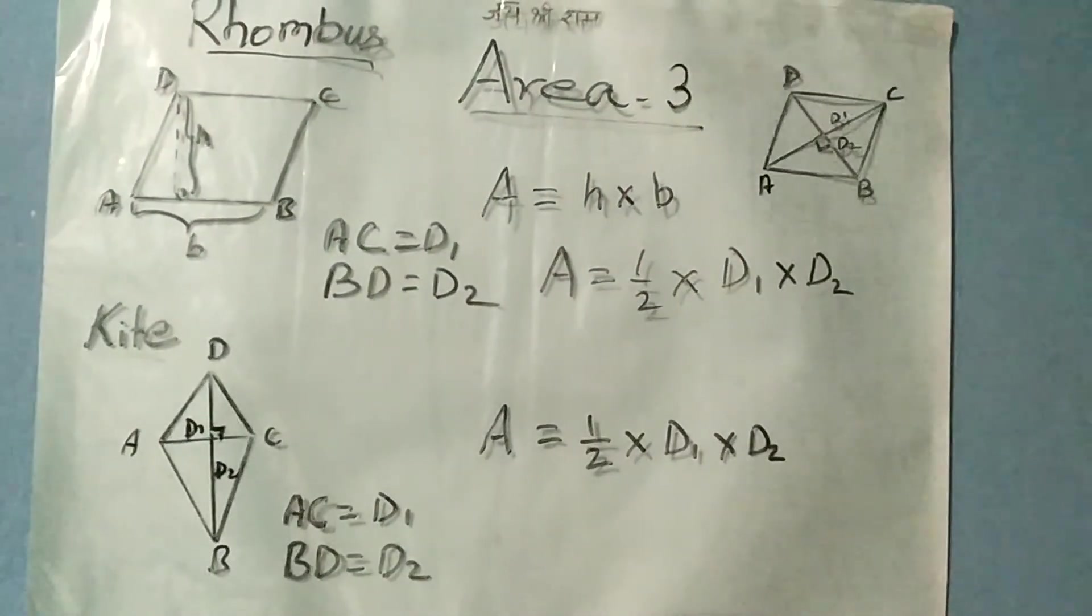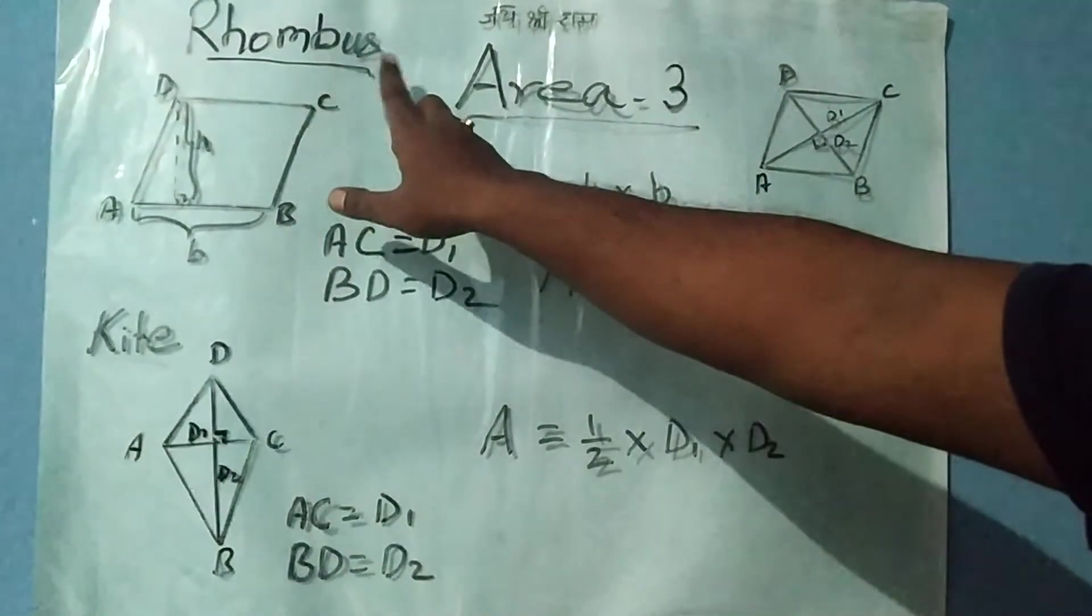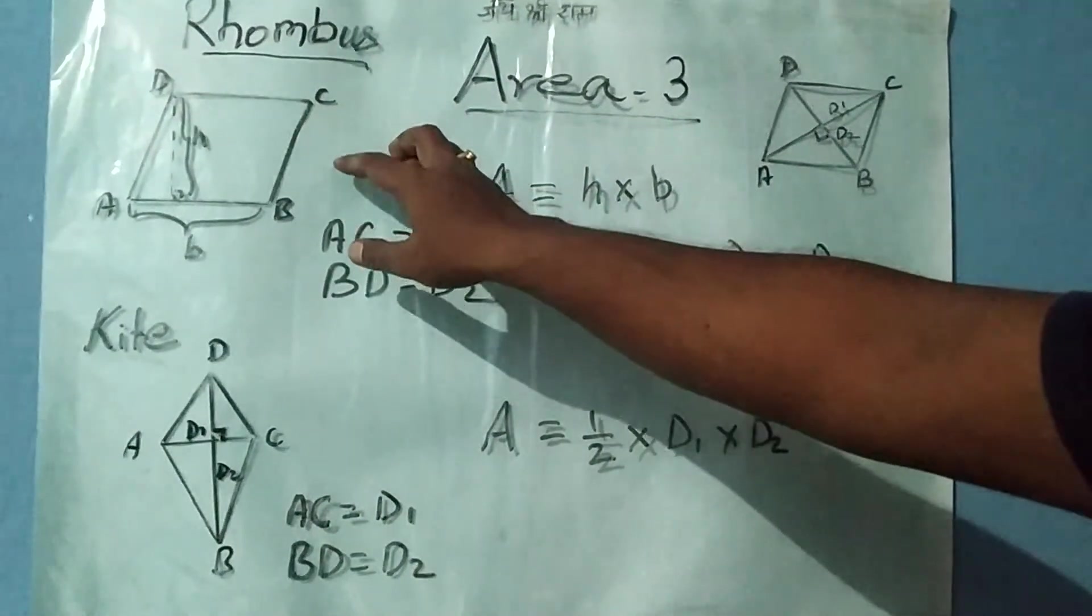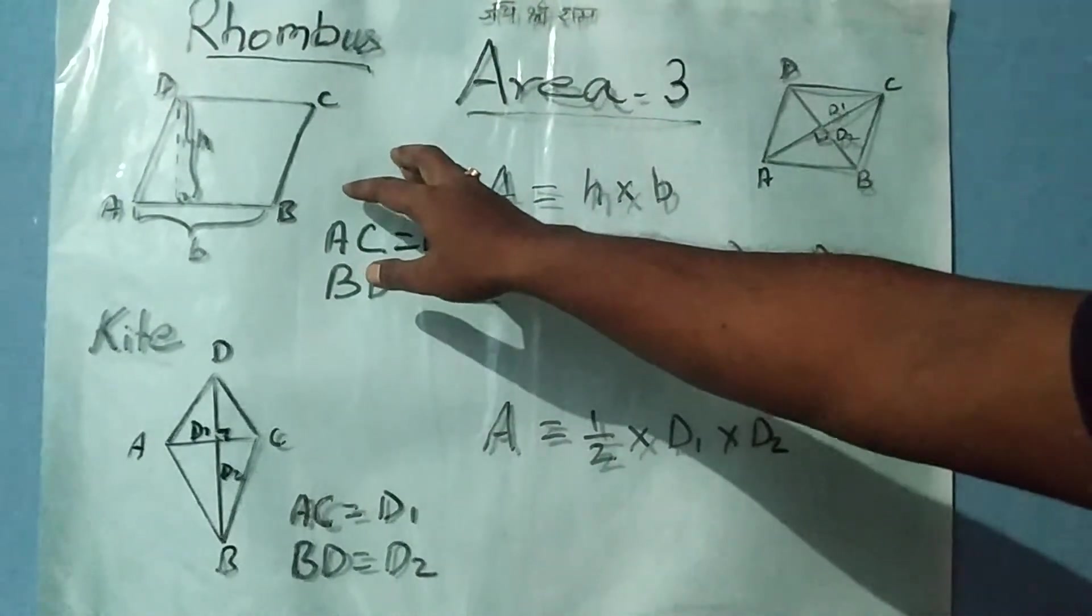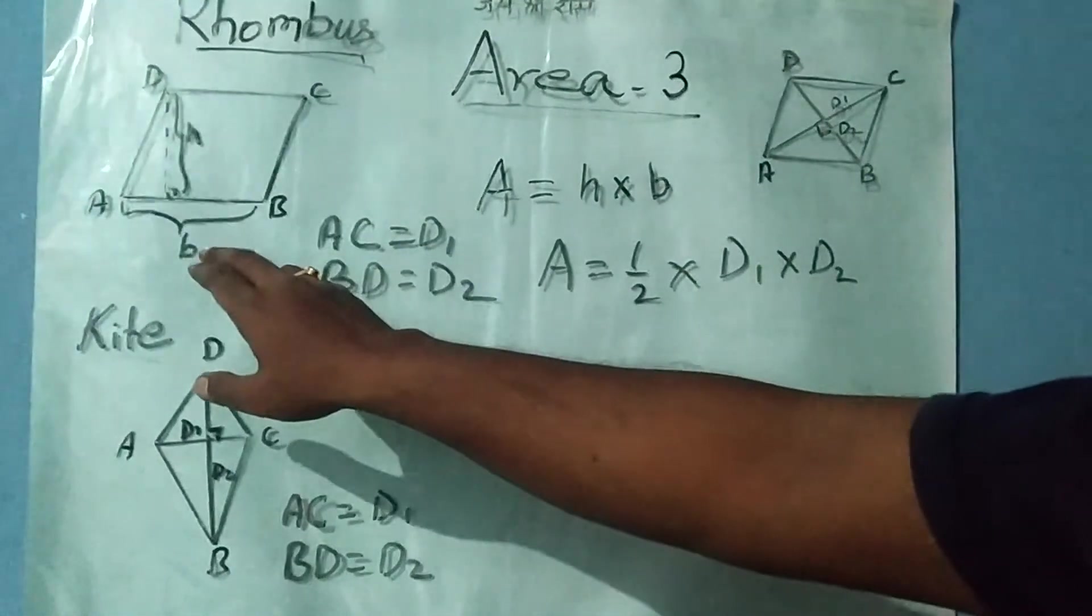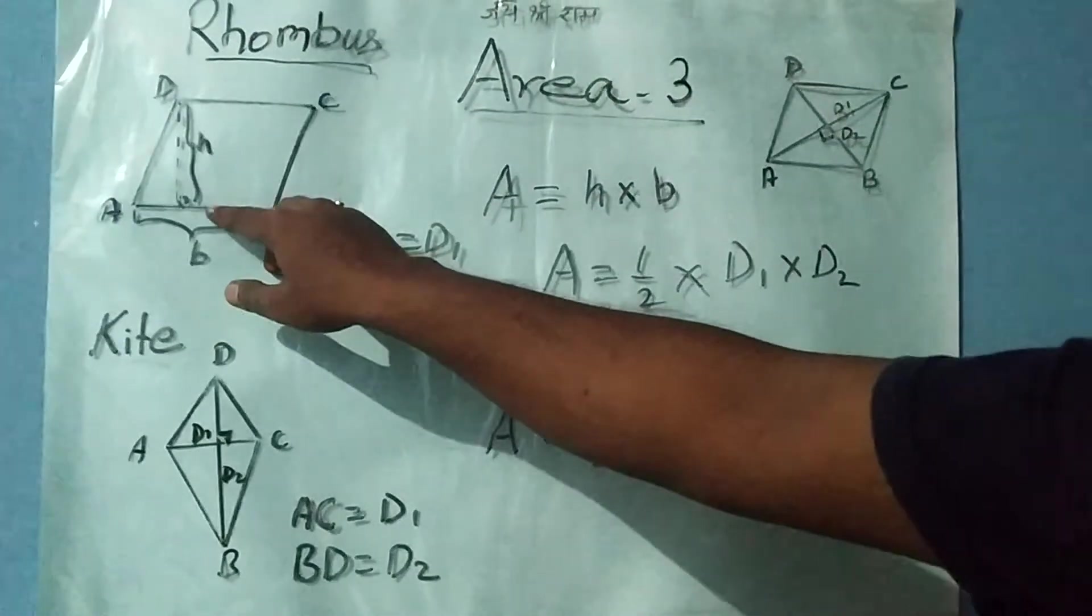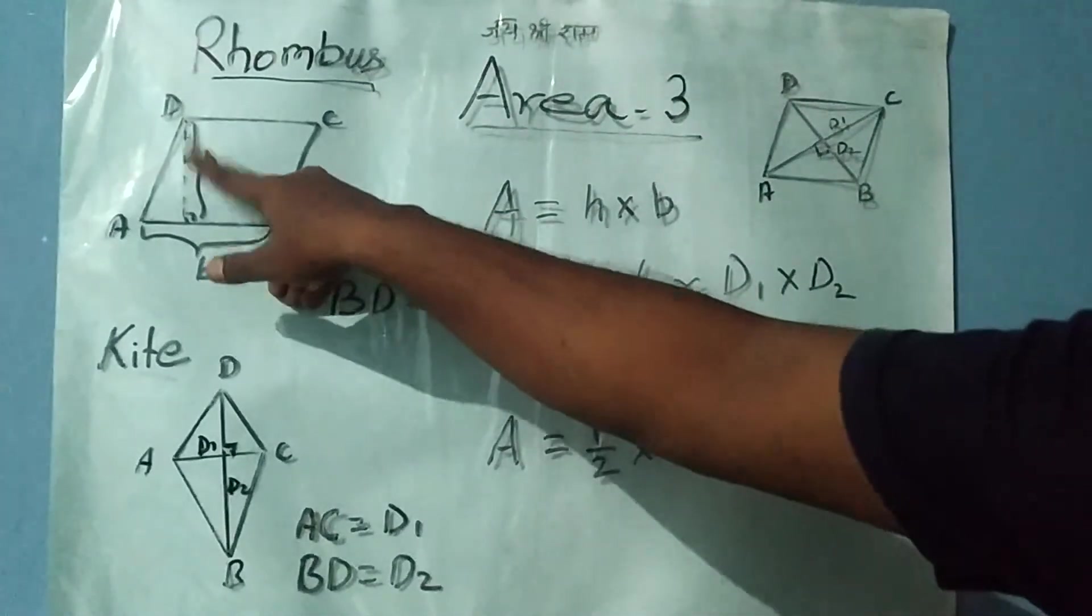So friends, let's revise once again. To find the area of rhombus, we can apply the formula for the area of a parallelogram: area equals h × b, where b is the length of AB and h is the distance between these two parallel lines.